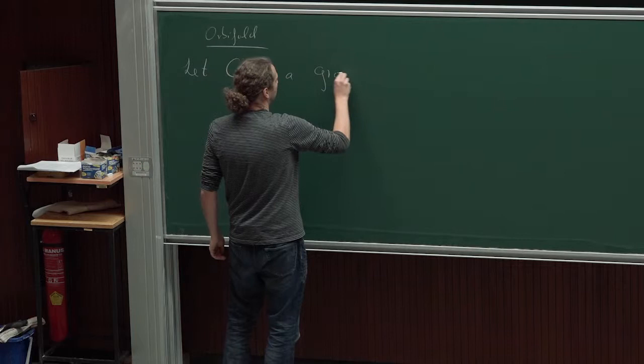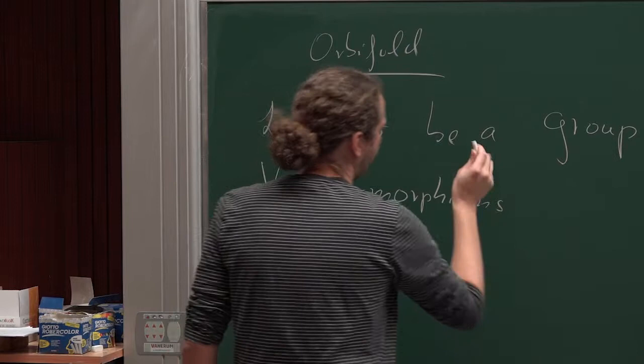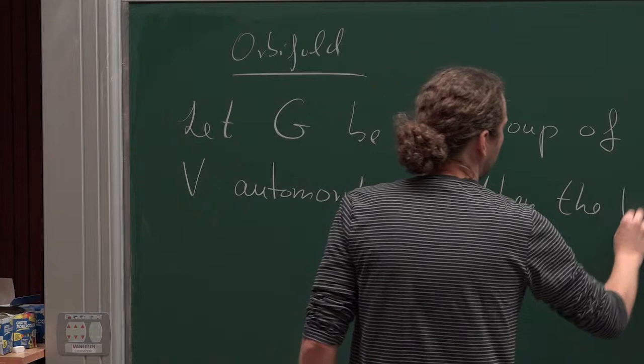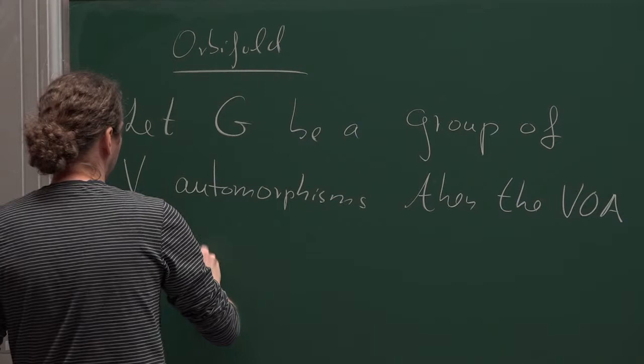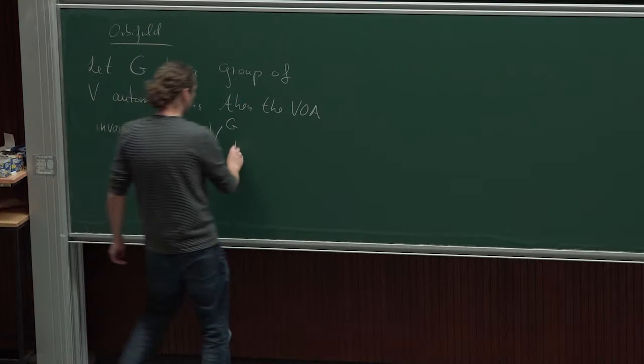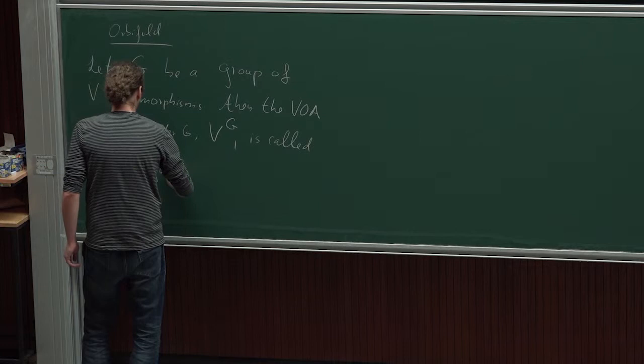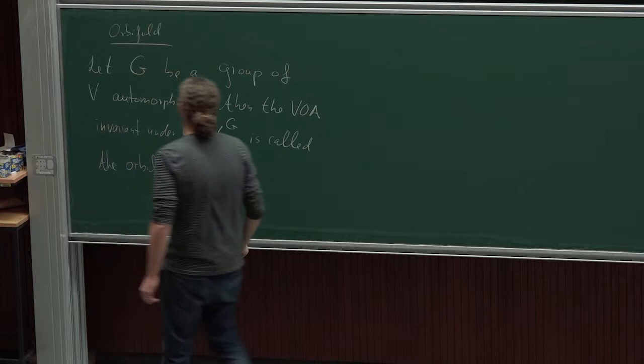Let G be a group of V automorphisms. Then the theory invariant under G — we call it V with a superscript G — is called the orbifold VOA, or the G orbifold VOA.